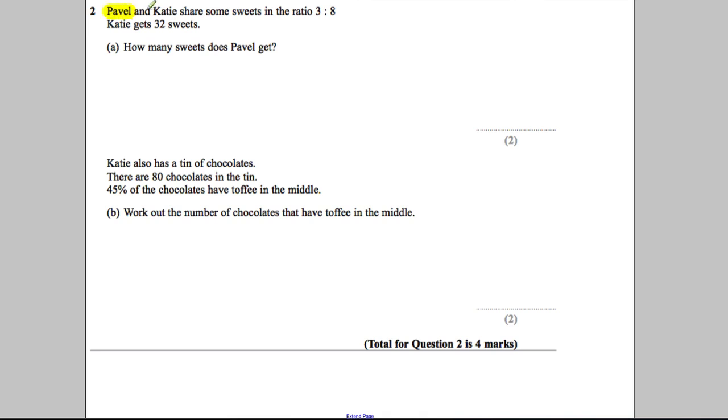Pavel and Katie share some sweets in the ratio 3:8. Katie gets 32 sweets. How many does Pavel get? I'd always draw a picture of something like this, so there's my picture.